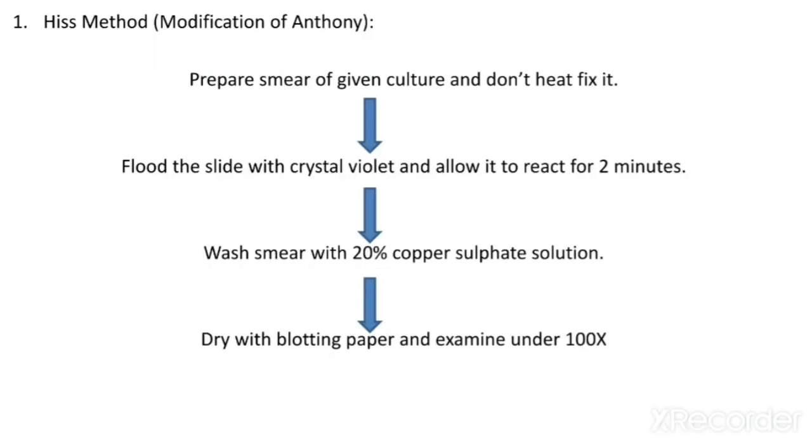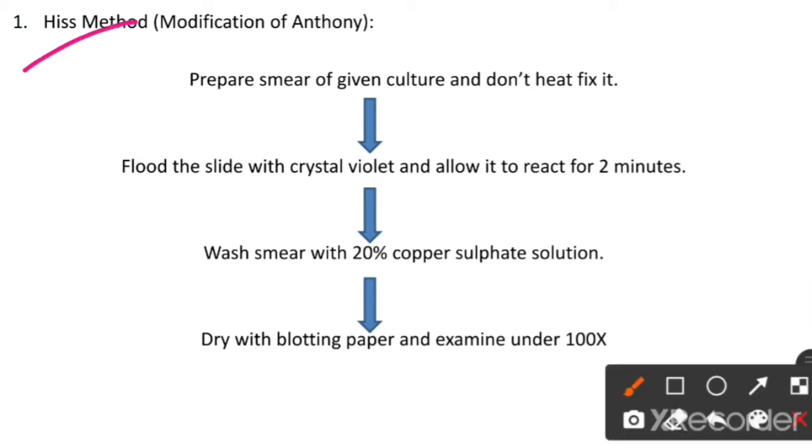Now let's see what is the procedure. Here we are going to understand the capsule staining with the help of Hiss method, modification of Anthony method. We have to prepare smear of given culture and we don't have to fix it with the help of heat. Just first we have to prepare a smear on the slide.